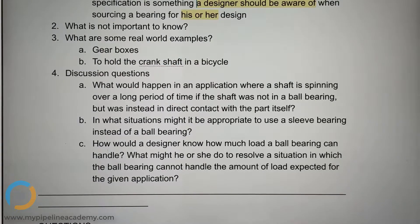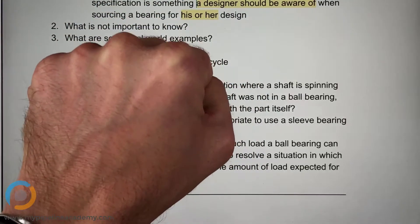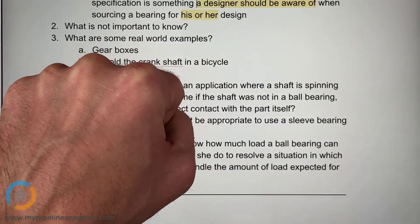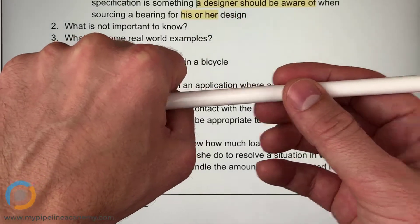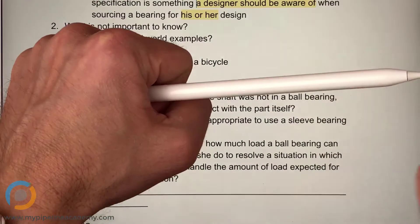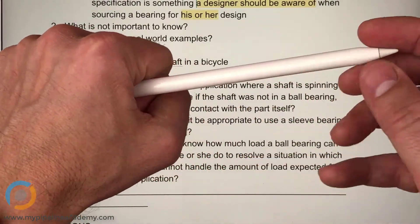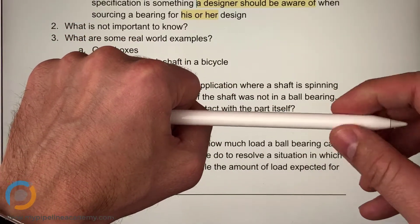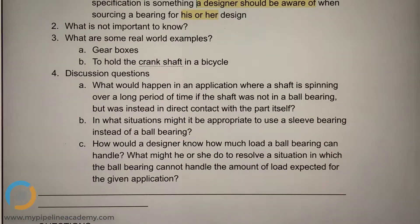So what would happen in an application where a shaft is spinning over a long period of time if the shaft was not in a ball bearing but was instead in direct contact with the part itself? Let's say my fist is the part, it's some kind of housing or just a block, and I have this shaft that needs to spin inside this part. It's spinning real fast. If I do not have a ball bearing at this interface, if this shaft is just spinning directly in a hole in this part, I would see creating a lot of friction, heat, and then wearing out the part really fast.